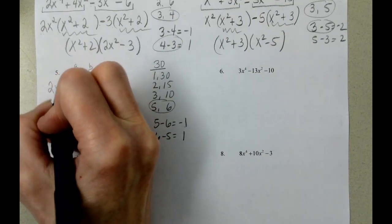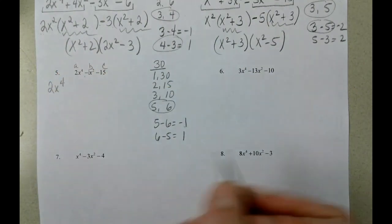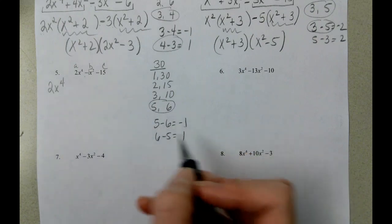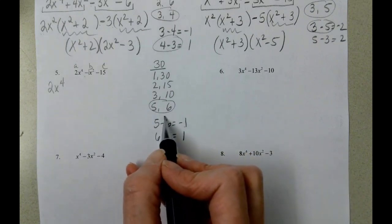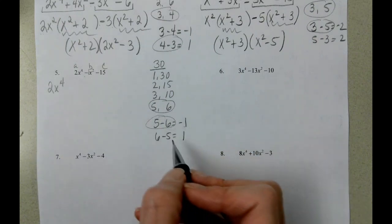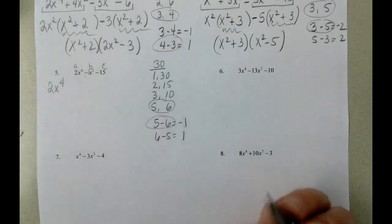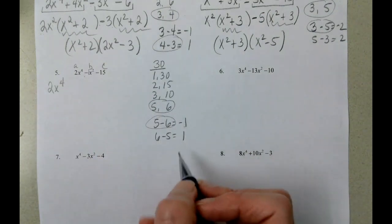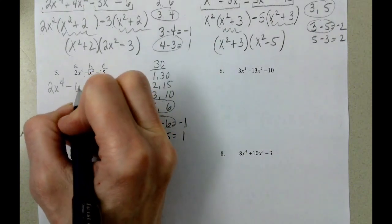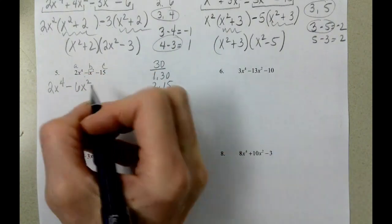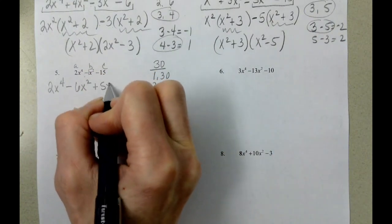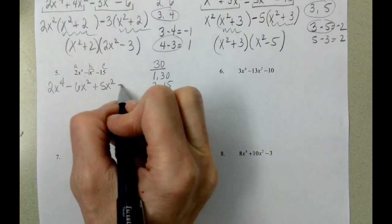We've got 2x to the fourth, and I actually am going to switch these around. I know I don't do that very often, but 5 goes with 15 maybe a little bit better than 6 does. So I'm going to do minus 6x squared plus 5x squared minus 15.